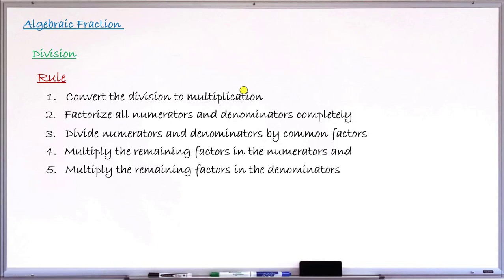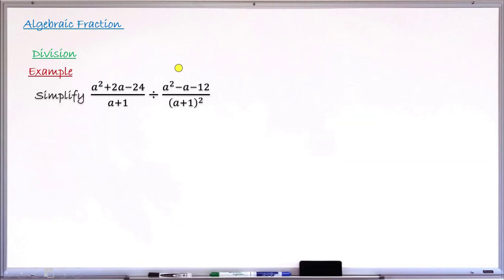Let's take an example. Simplify this fraction: (a² + 2a − 24) over (a + 1), divided by a second fraction (a² − a − 12) over (a + 1)².